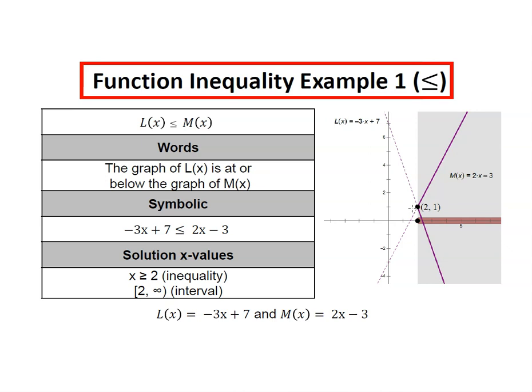Where is L(x) less than or equal to M(x)? In words, we say the graph of L(x) is at or below the graph of M(x). Symbolically, we use the less than or equal to symbol, and our solutions are x greater than or equal to 2. That's an inequality. Or we use the interval [2, ∞), including 2.